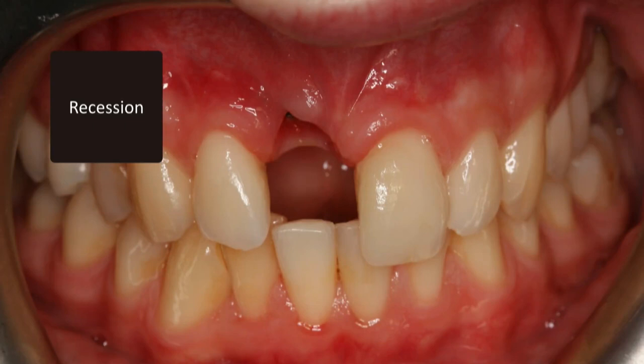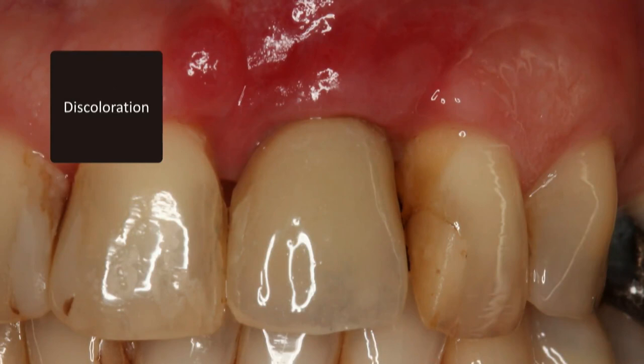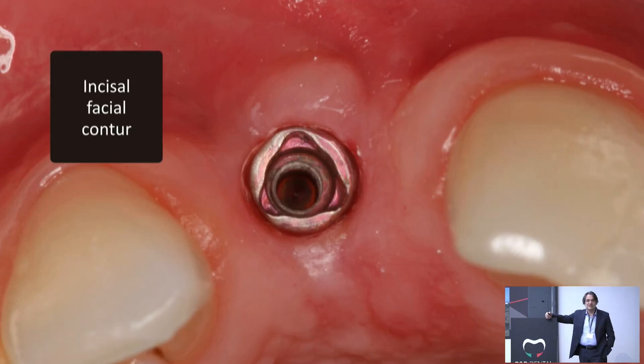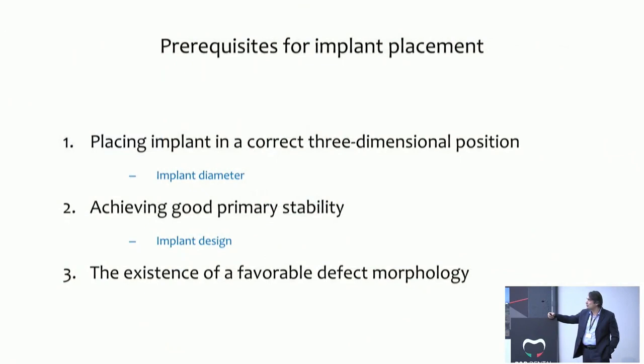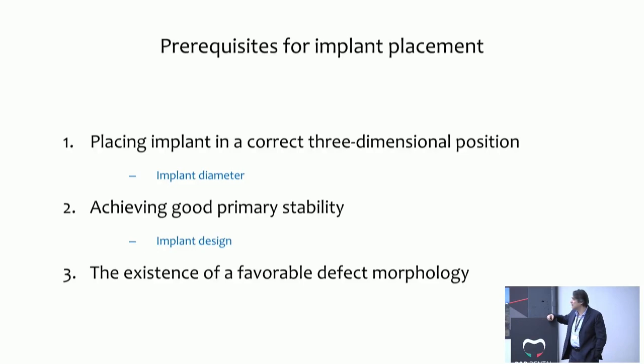The main complications of immediate implant placement are recession, discoloration, and insufficient or collapsed buccal contour. To prevent these complications, we need to fulfill certain prerequisites: knowing how to place the implant in the correct three dimensions, choosing the right implant diameter, achieving good primary stability, selecting the right implant design, and having favorable defect morphology.